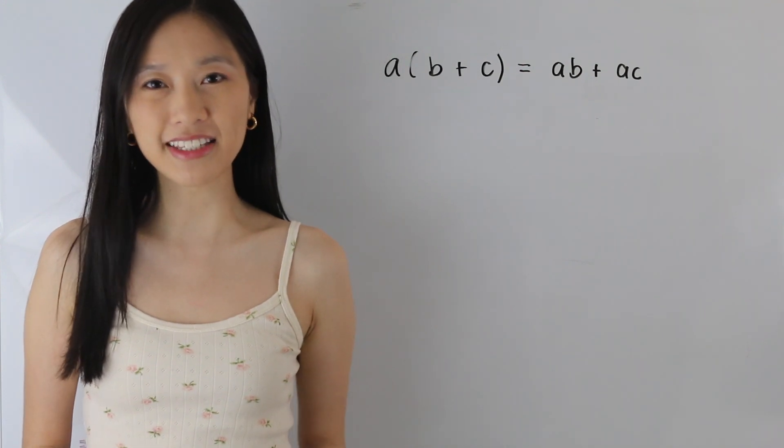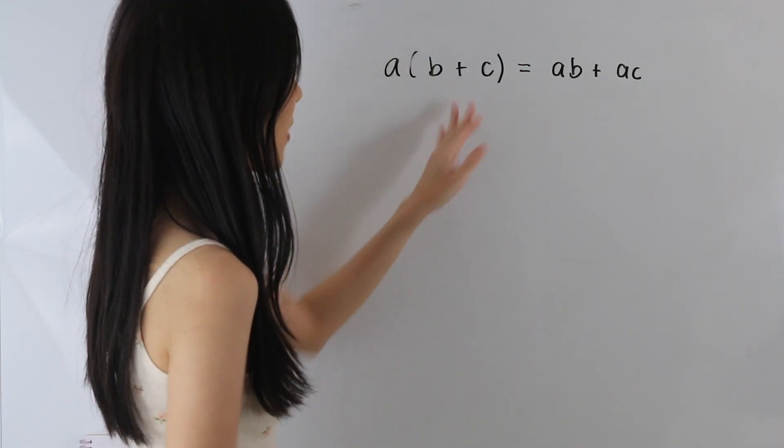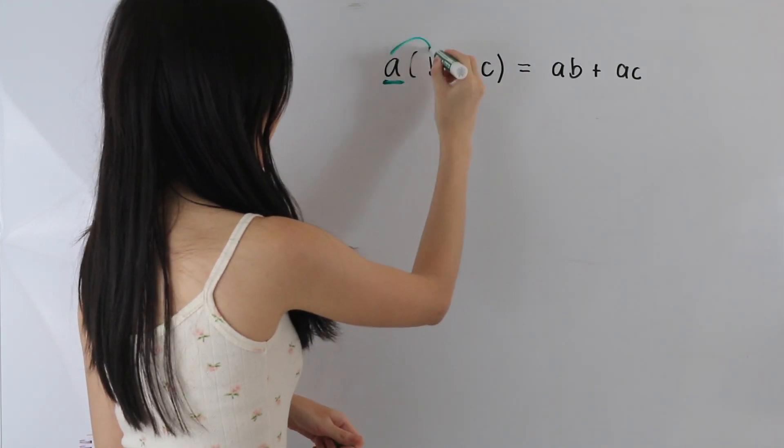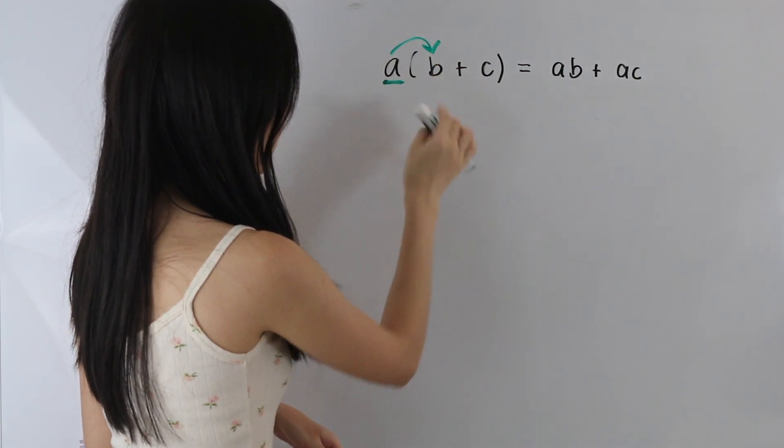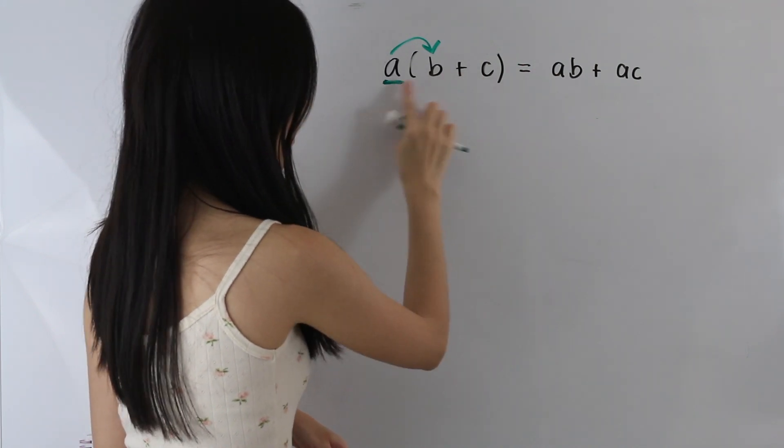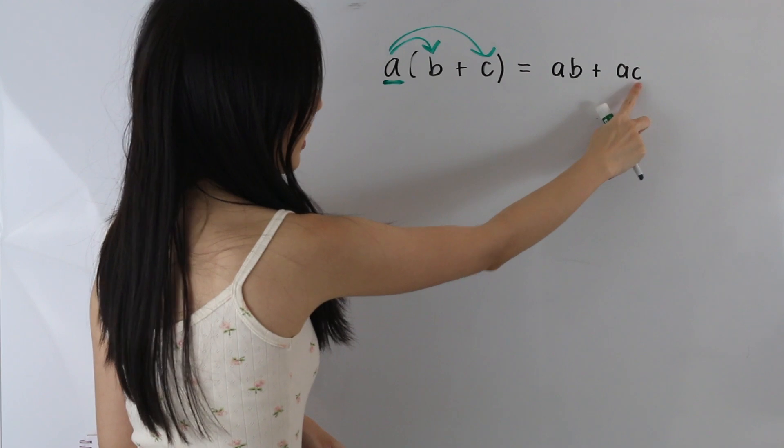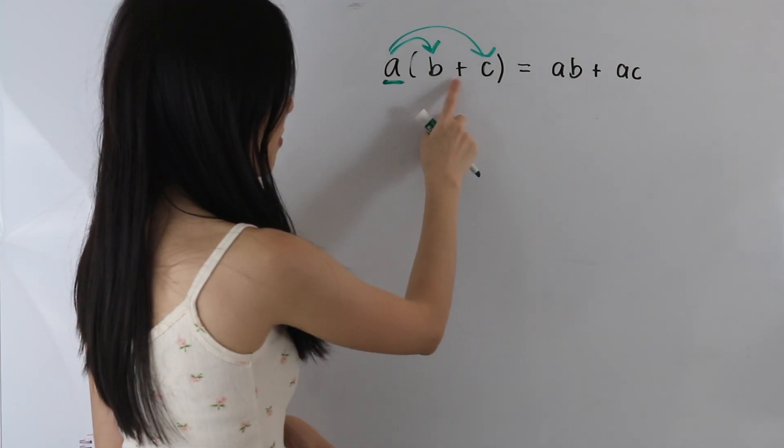So what the distributive property tells us is that when we have something in this form, we can take the number outside of the parentheses and multiply it by each term inside the parentheses. So we have AB from here, and then we have AC from here. And this is a plus sign because we have a plus sign here.